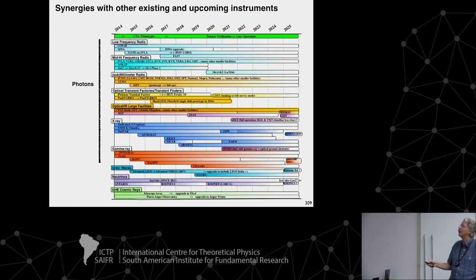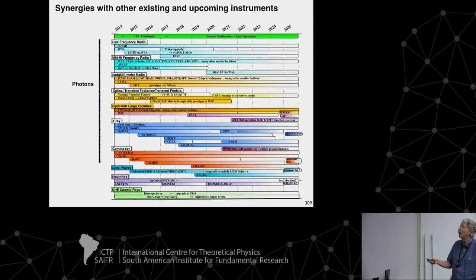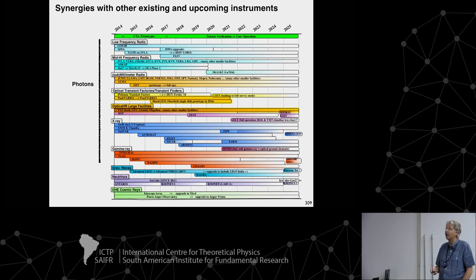Fermi was looking for variability in the gamma-ray sky, making movies of the sky day by day, seeing sources pop up and vanish. The Crab Nebula — previously considered a standard candle — turned out to be variable. Researchers then tried feeding in high-energy neutrino events to see whether something happened in gamma rays at the same time and location.